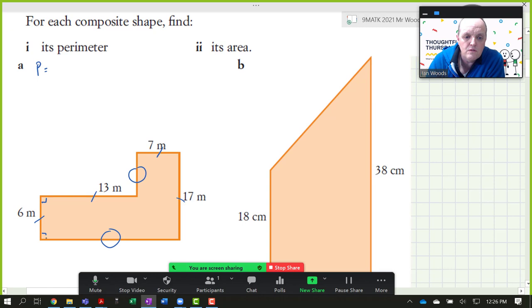Because we can assume from the diagram that all of these angles are right angles, then that means that the sides must be parallel. And because the sides are parallel, then we can assume that that distance plus that distance must be the 17. Because we know this is 6, that one must be 11.